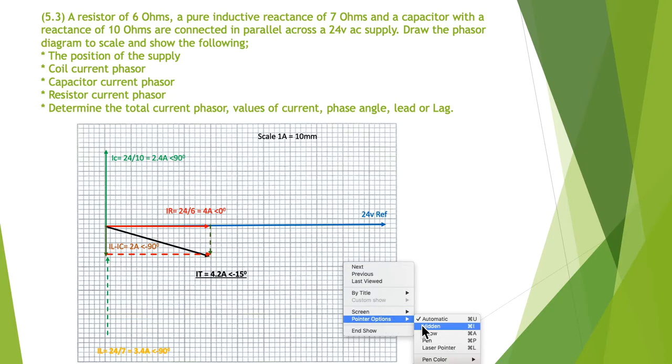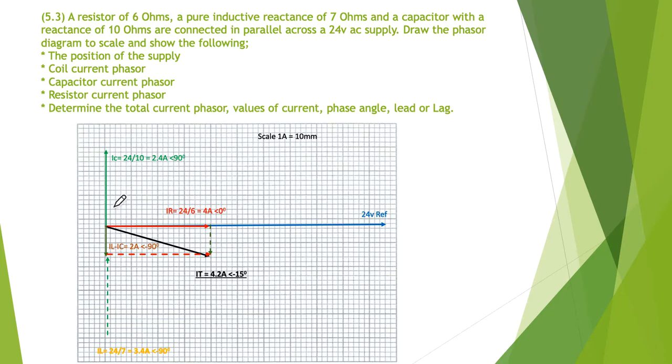We've done the addition of the two phasors that were opposite each other. We were able to do an arithmetic or algebraic subtraction to get that. Then we had to add these two together and we end up with an I total of 4.2 amps at minus 15 degrees. So we know that it's lag. We know the phase angle is at 15 degrees, and we know the value of the current is 4.2 amps.